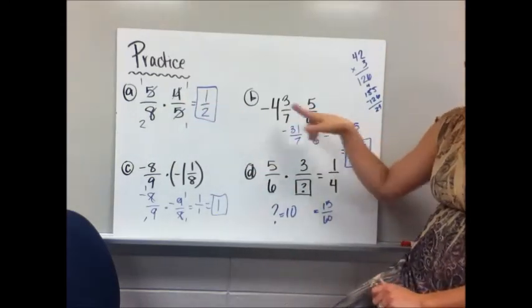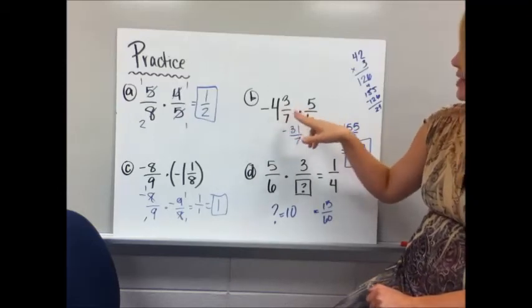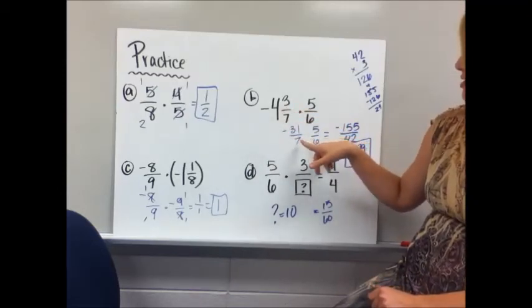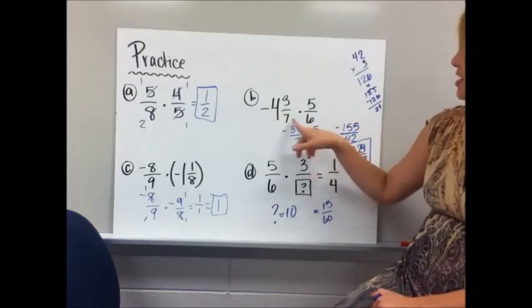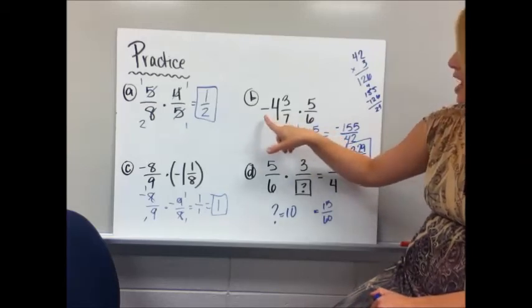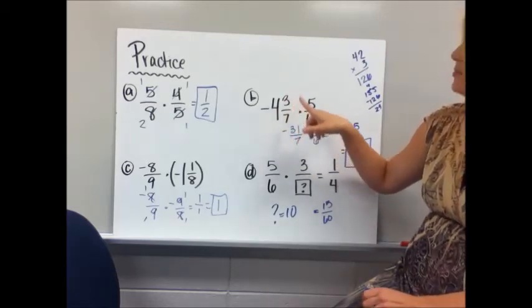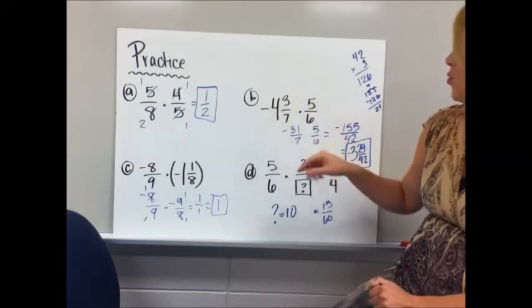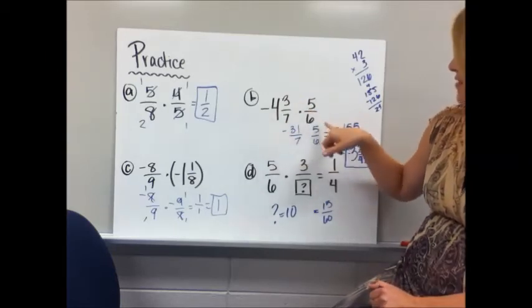On practice B, turn the mixed number into an improper fraction, so you can see what I did there, of 31 over 7, because 7 times 4 is 28, 28 plus 3 is 31, and it stays negative. 5 over 6.